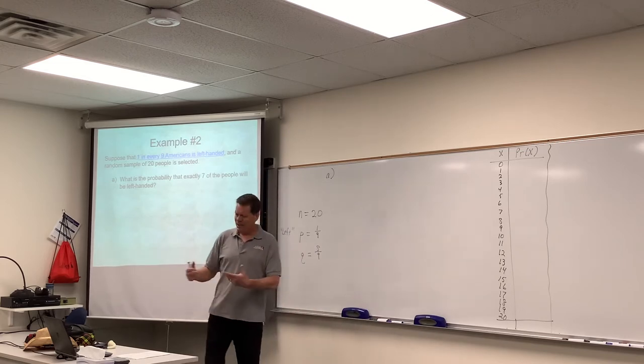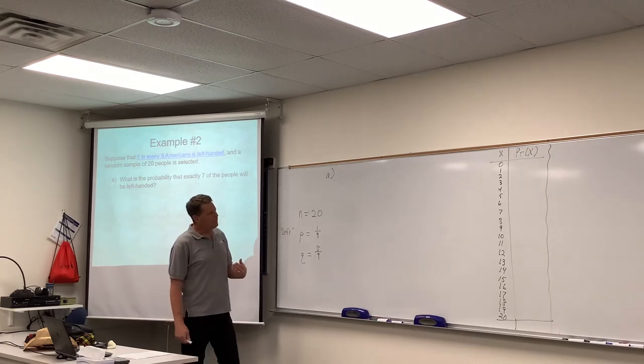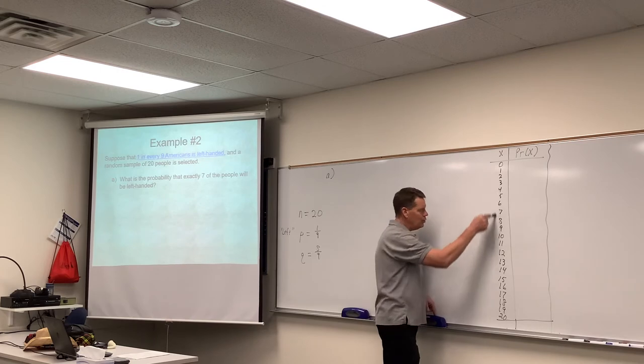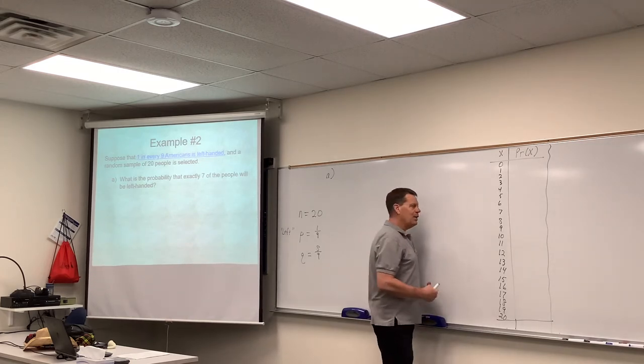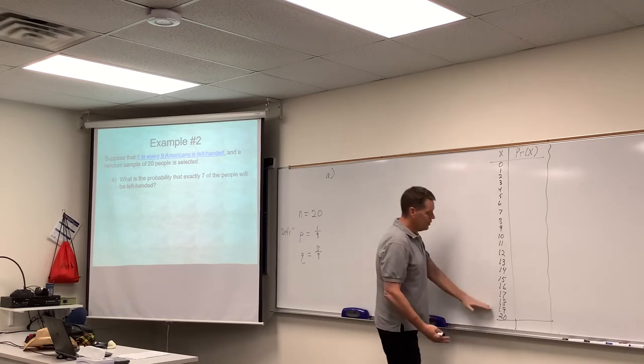Anyway, don't think good-bad when you assign these numbers. But of these 20 people, couldn't we have anywhere from zero to all 20 of them be left-handed? That is possible. So this is a probability distribution, and we can list all the values from zero to 20.